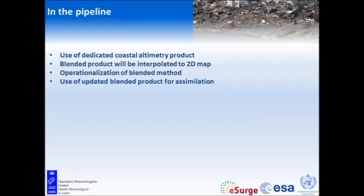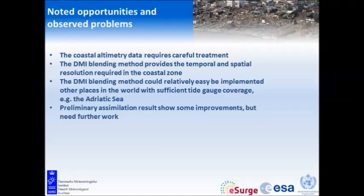We will then interpolate our blended product to a 2D map so it's much easier to get an overview picture. We will make it operational so we have it in real time and can provide it to the eSearch web page during an event. We will also use this updated blended product in the assimilation. It would be quite easy to apply to other places — for instance, along the Italian and Slovenian coast where there is a nice setup with a lot of tide gauges.